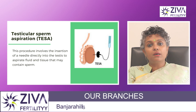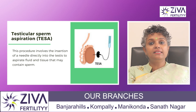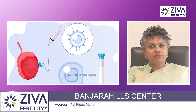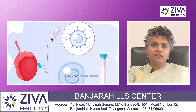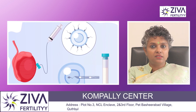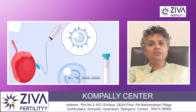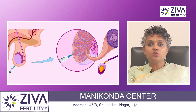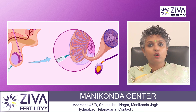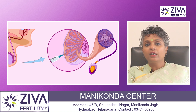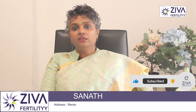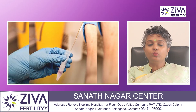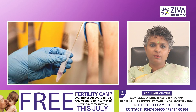Next is Testicular Sperm Aspiration, also called TESA. It is a less invasive procedure compared to TESE. It is typically performed using local anesthesia, and a very thin needle or biopsy instrument is inserted directly into the testes to aspirate small amounts of testicular tissue and fluid containing sperm. The extracted material is then examined under a microscope to locate and retrieve viable sperms.